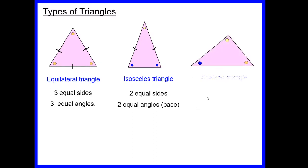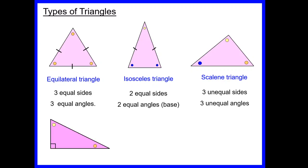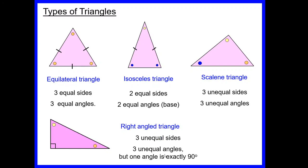A scalene triangle has all sides of different lengths and all angles of different sizes. A special type is the right-angled triangle, which has three unequal sides and three unequal angles but includes one angle that is exactly 90 degrees. You can have a scalene right-angled triangle or an isosceles right-angled triangle, though scalene is more common.